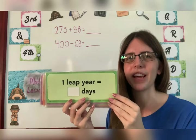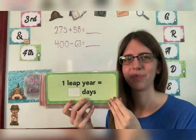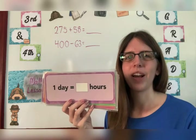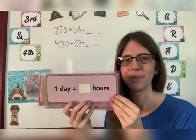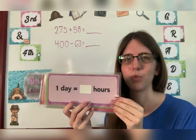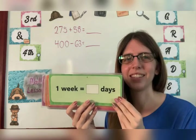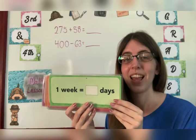One leap year equals how many days? Three hundred sixty-six. One day equals how many hours? Twenty-four hours. One week equals how many days? Seven days.